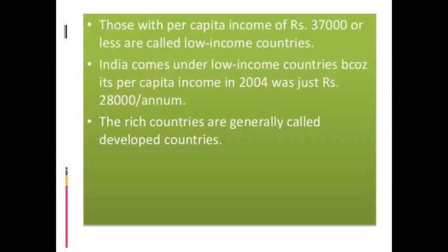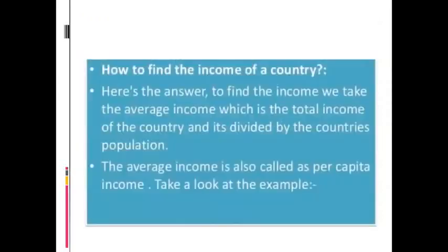The rich countries are generally called developed countries. These countries are called developed because the per capita income of these countries is very high. Per capita income is calculated from total income divided by total population.